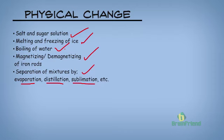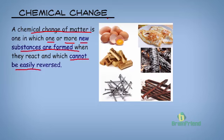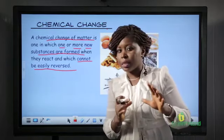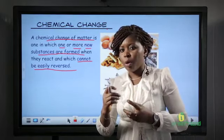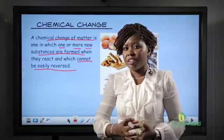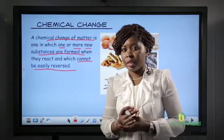A chemical change is the exact opposite of a physical change. A chemical change of matter is one in which one or more new substances are formed when they react and which cannot be easily reversed. This means that in a chemical change, the chemical properties or internal makeup of the reacting substances are changed and altered, and so in forming products, some new substances are included.